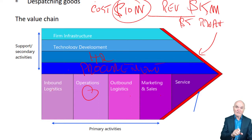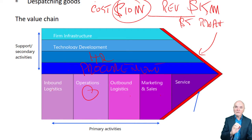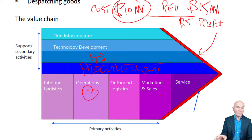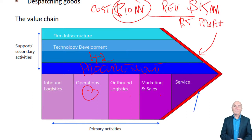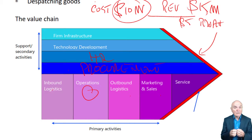So if it's low cost per unit, make sure you concentrate on it. If it's fantastic quality that they're paying for, make sure you always produce goods of the finest quality. If it's great flexibility and getting goods to them really quickly, then make sure all of your activities are arranged to maximise the ability to give customers what they want. This is what you need to do in operations management.